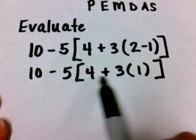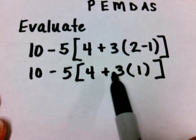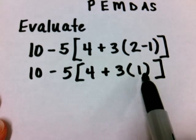Now we work inside of the bracket, following our order of operations. So instead of adding 4 plus 3, I must first multiply 3 times 1.